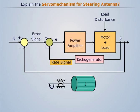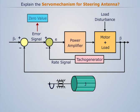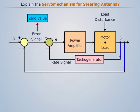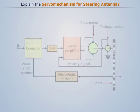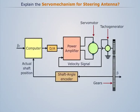We control the oscillatory effect by introducing special compensation feedback. The rate signal obtained from the angular velocity of the motor is subtracted from the error signal before the error reaches zero. This whole loop configuration is known as cascade control in the process field, or a minor loop feedback in servo mechanisms. Let us now summarize the servo mechanism for steering the antenna.